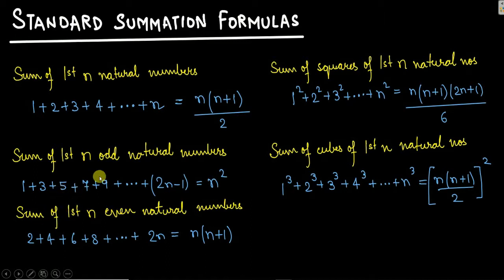Now moving to sum of first n even natural numbers. We have 2, 4, 6, 8 and so on till 2n. You need to add all these even natural numbers. The formula that you'll get is n into n plus 1. Simply substitute the value you'll get the result.